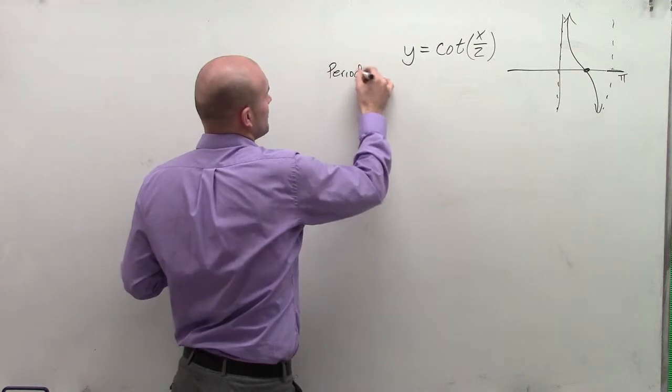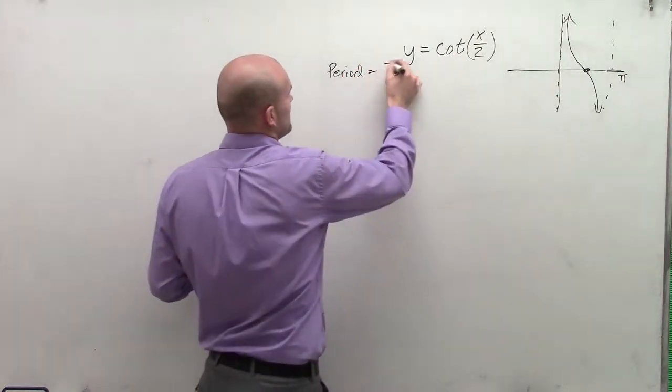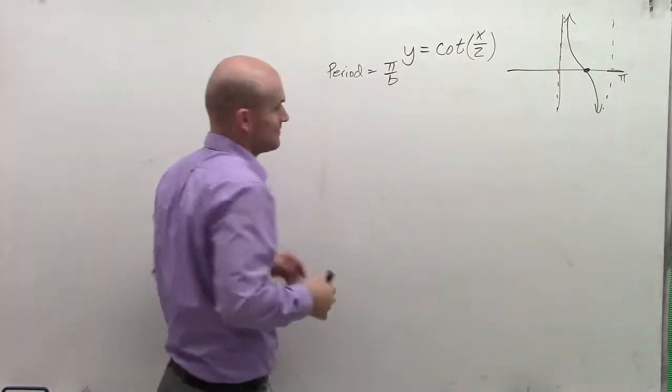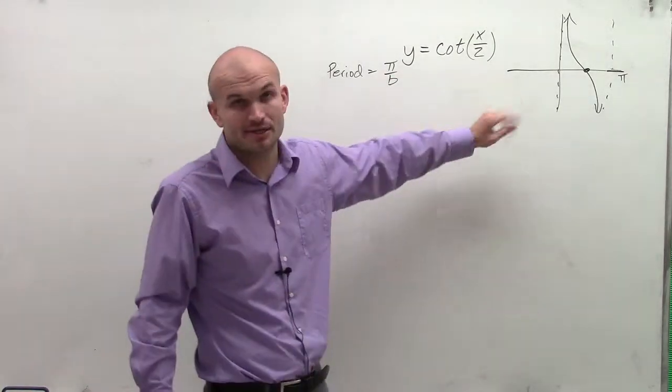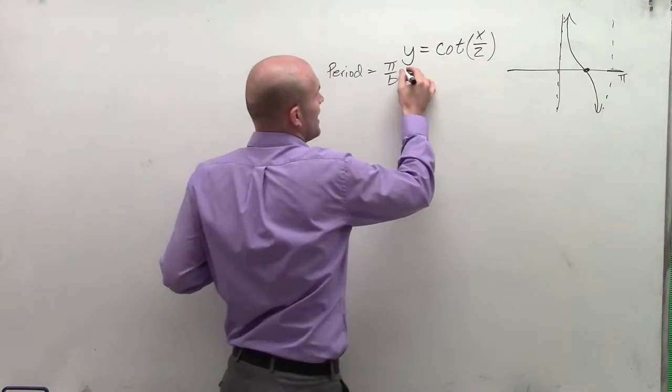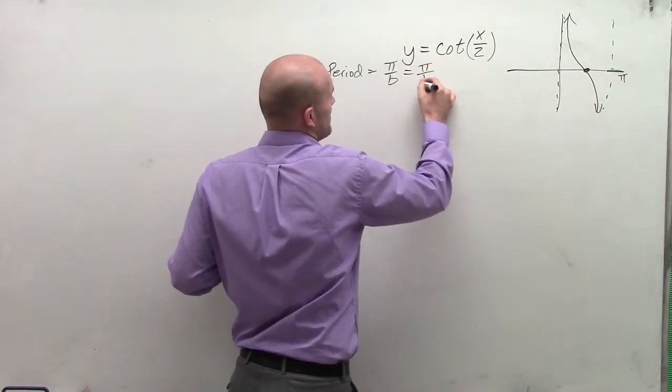Now the period for the cotangent and tangent graph is going to be pi divided by b. Remember, b is going to be your coefficient of your x value within your function. So therefore, I have pi divided by 1 half.